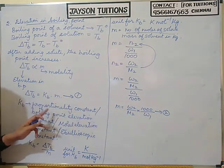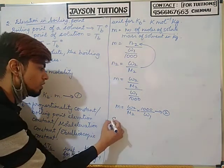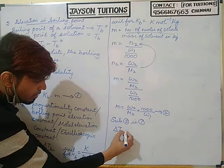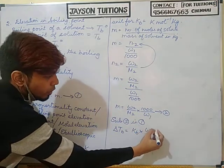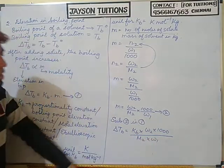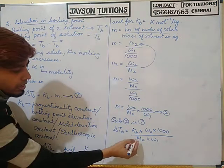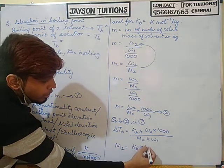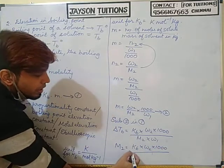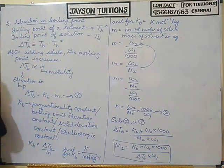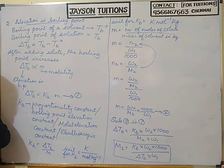Substituting equation two into equation one: delta Tb equals Kb into (W2 times 1000) divided by (M2 times W1). We always calculate M2, so rearranging: M2 equals Kb times W2 times 1000 divided by delta Tb times W1. This is the formula to calculate the molar mass of the solute using elevation in boiling point.